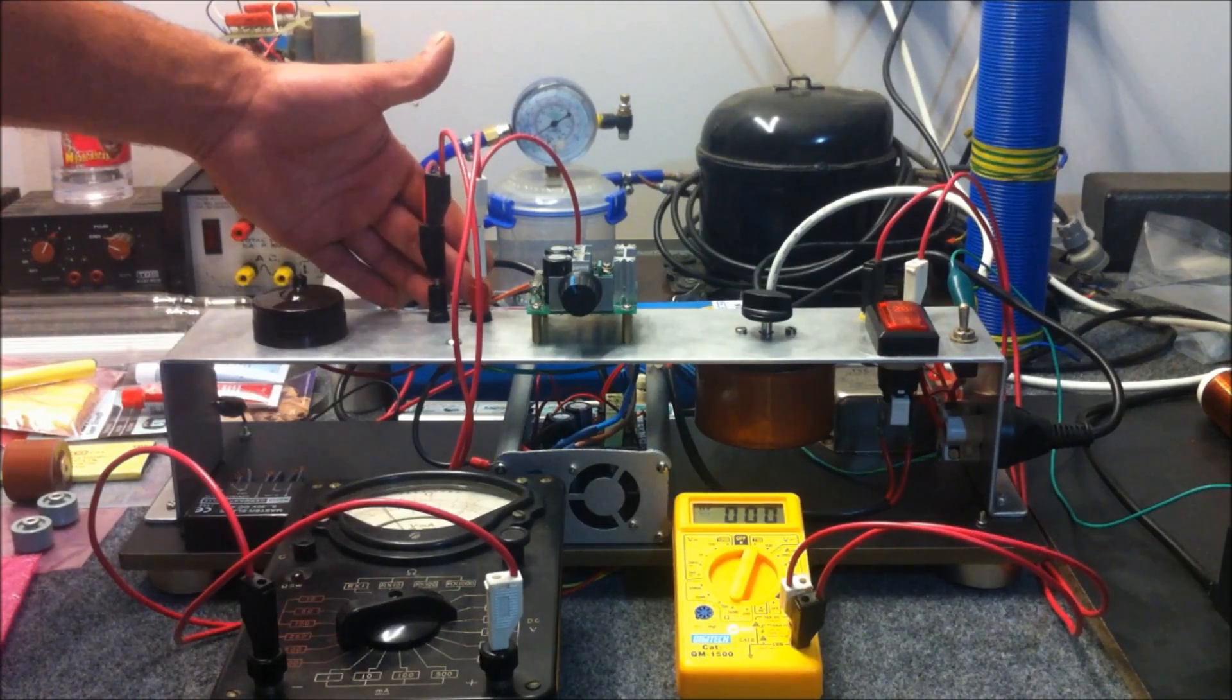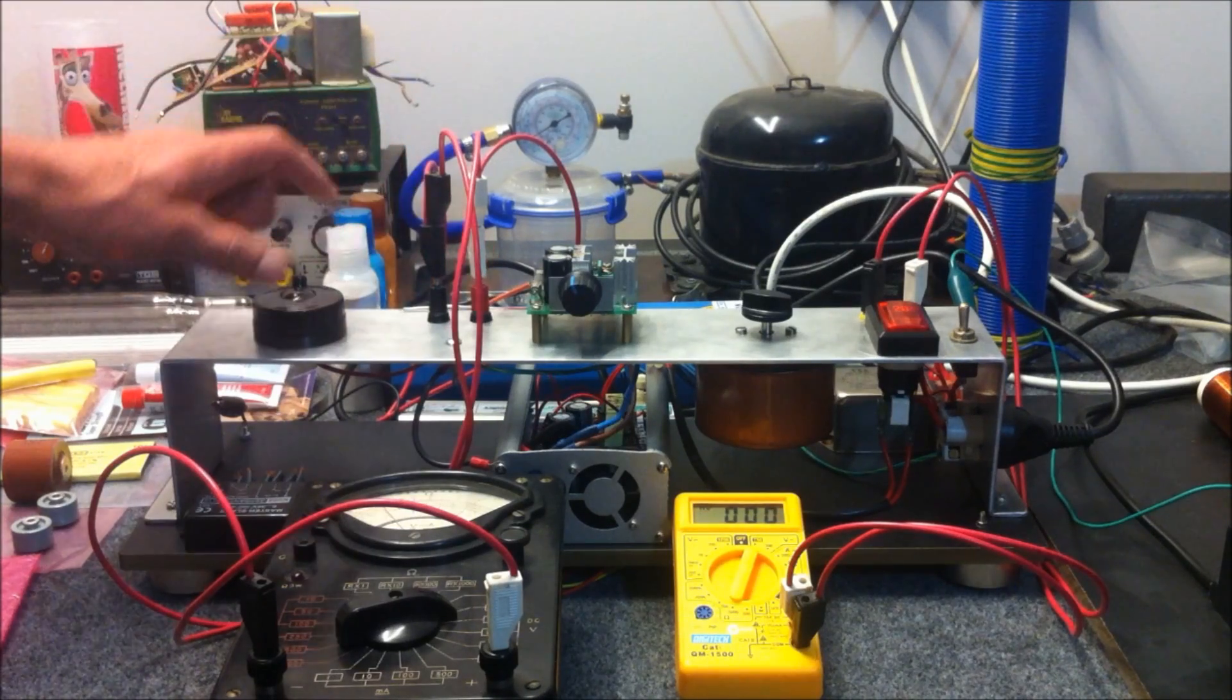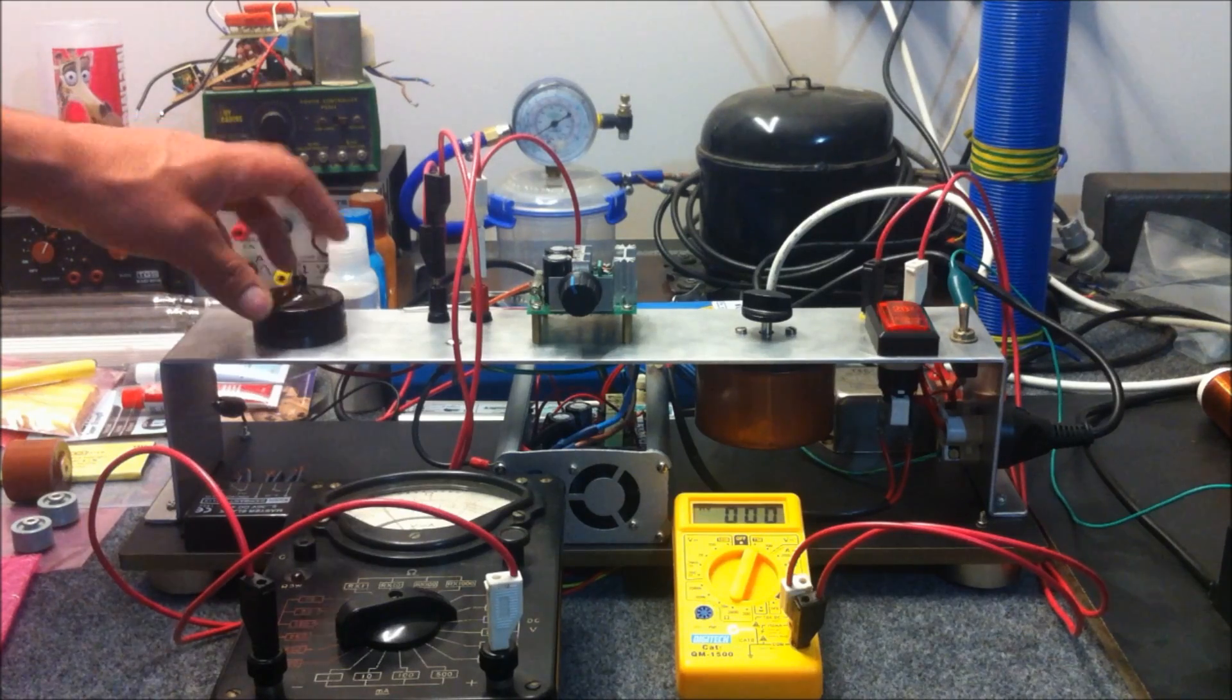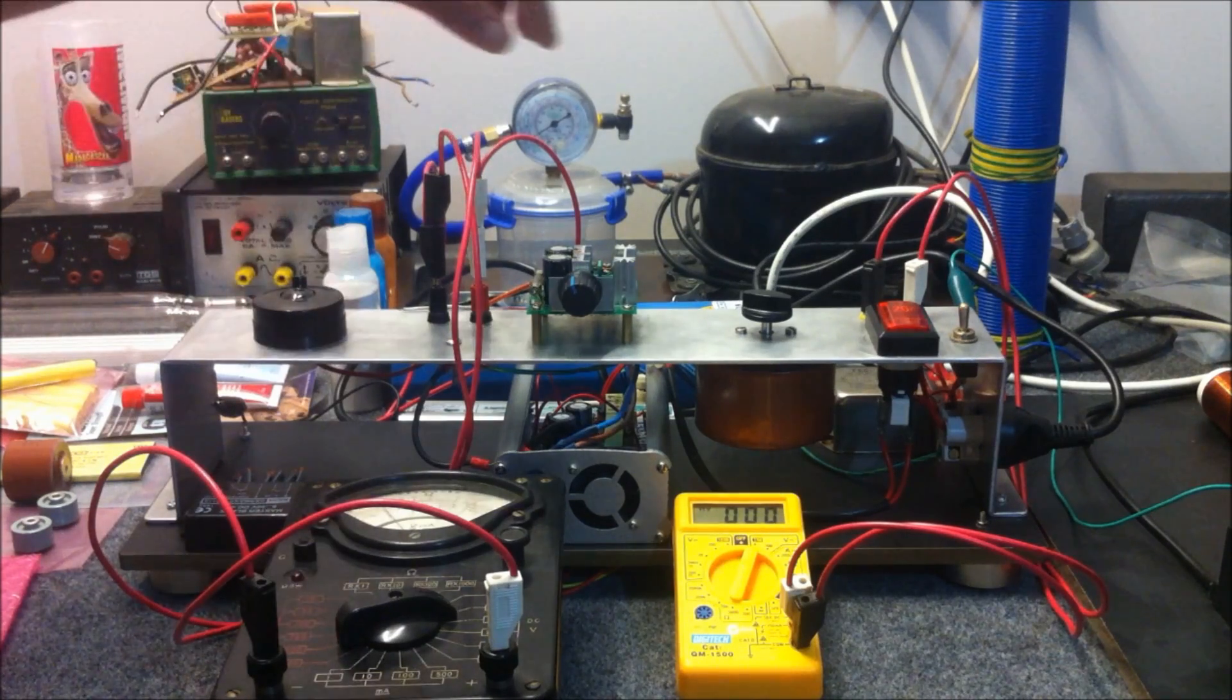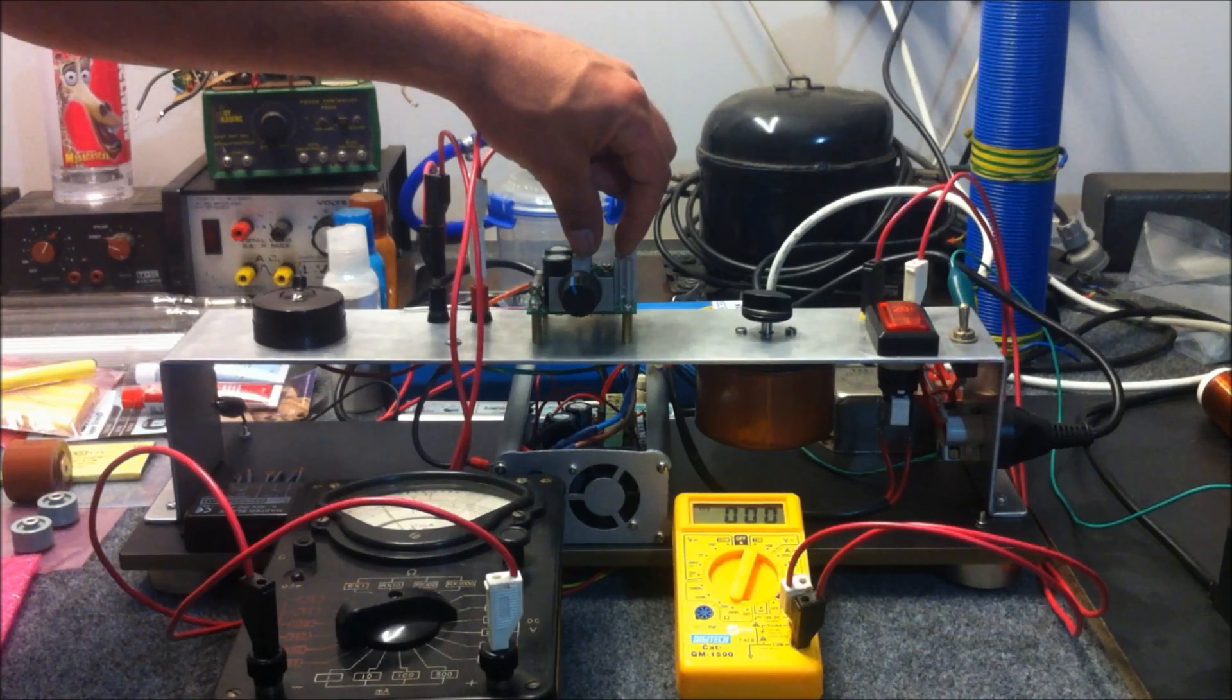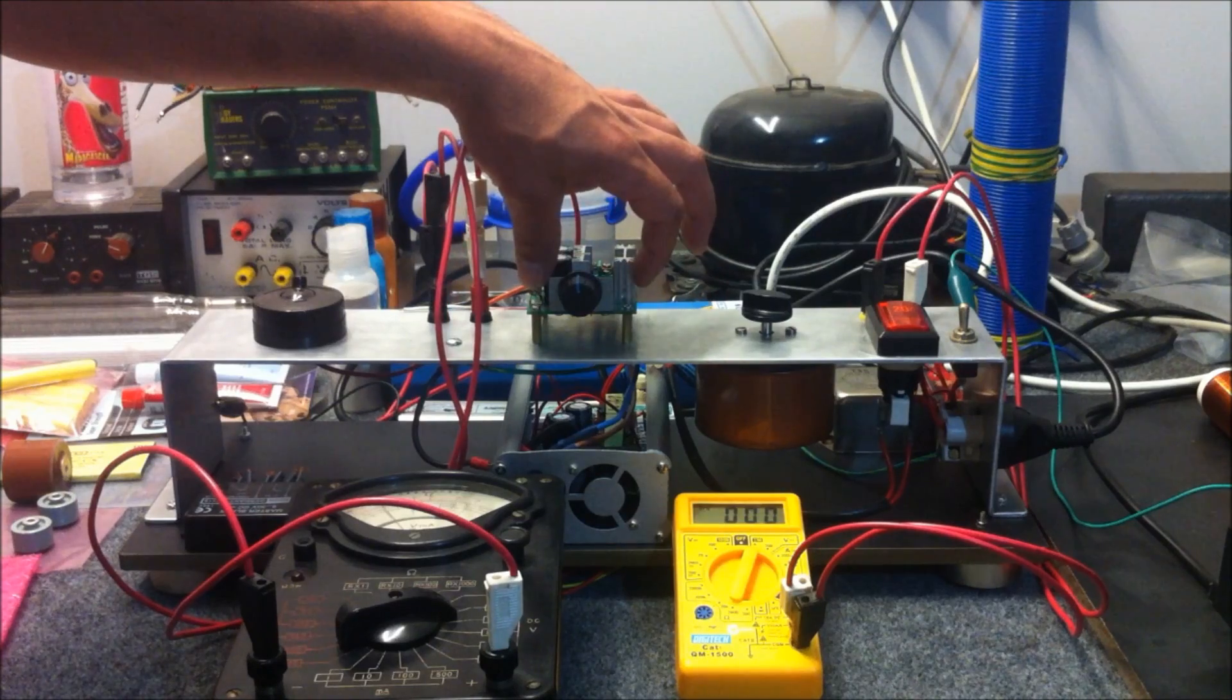Over here we've got the 12 volt input terminals which are the banana plugs here. That goes straight through to this on and off switch which is an old-school ceramic thing. That feeds into the high frequency pulse width modulator here which allows us to control the current going into the circuit.